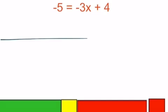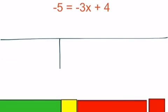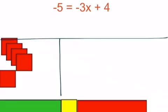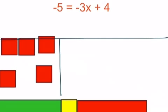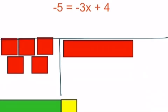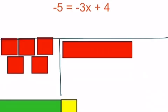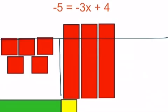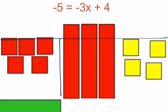Hopefully it looks something like this. Draw our table and model it quickly. We know we need negative 5 on the left side — five red units. On the right side we have negative 3x, so that means I need 3 rotated x-bars for my 3x. Then I have plus 4, which are 4 yellow units on the right side. I've now modeled the beginning of this equation.